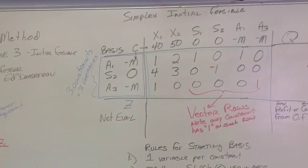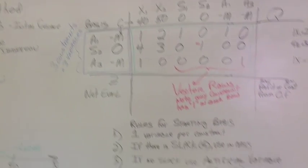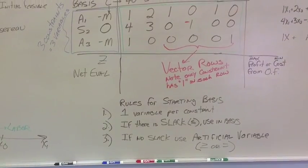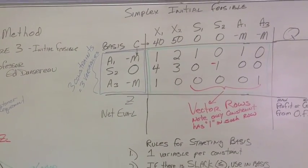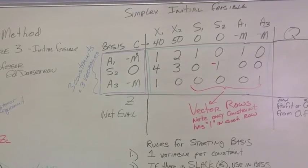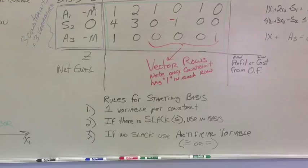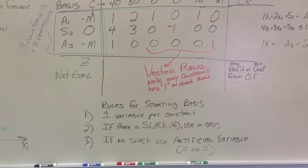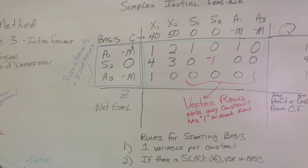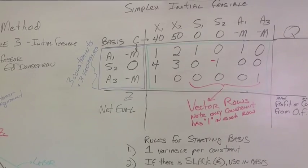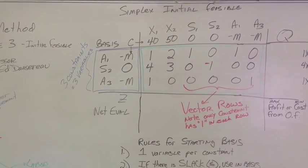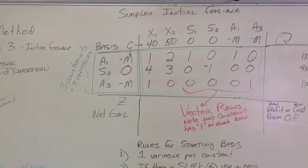Okay, now we've filled in the basis. Again, we followed the rules for the basis, one variable per constraint. You could see I have three constraints, so I have three variables. The second rule for the basis is if there's slack, we use it in the basis. So you can see s2 is in the basis and our coefficient from the objective function is 0.